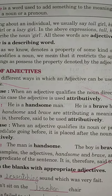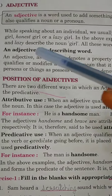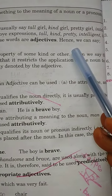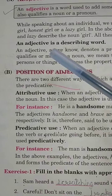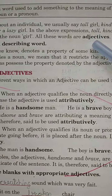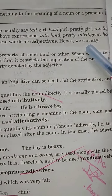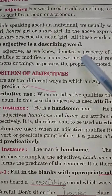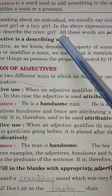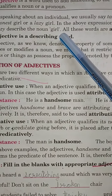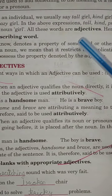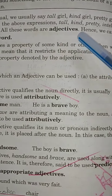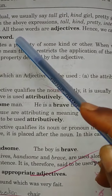Noun ki definition aap already jaante hain — kisi person, place, ya object ka naam. Now, while speaking about an individual we usually say: tall girl, kind girl, pretty girl, intelligent girl, honest girl, and lazy girl. In the above expressions, tall, kind, pretty, intelligent, honest, and lazy describe the noun 'girl'. So girl describe ho rahi hai — girl kaisi hai: lazy, honest, tall, short, kind, pretty etc. All these words are adjectives.